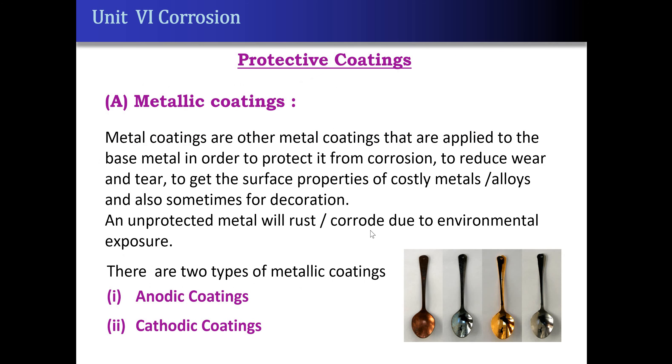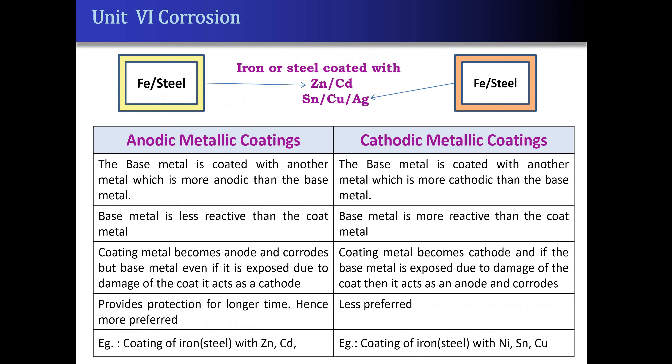There are two types of metallic coatings: anodic coatings and cathodic coatings. The basic difference between these two is that in anodic metallic coatings, the base metal is coated with a more reactive or more anodic metal. In this case, the base metal is comparatively less reactive than the coating.